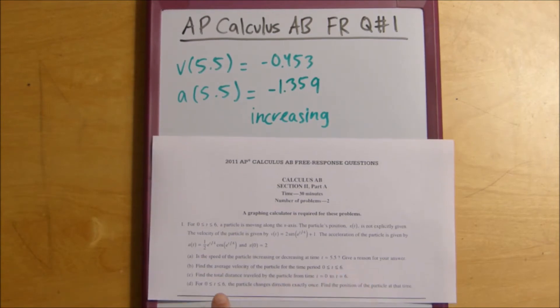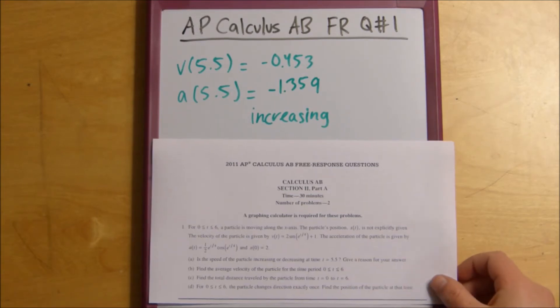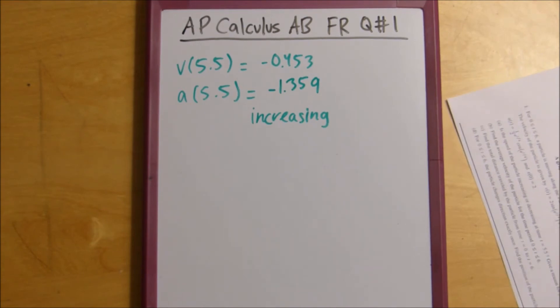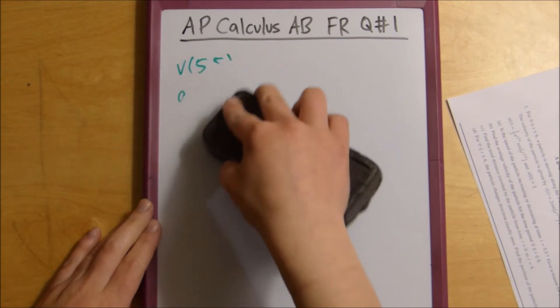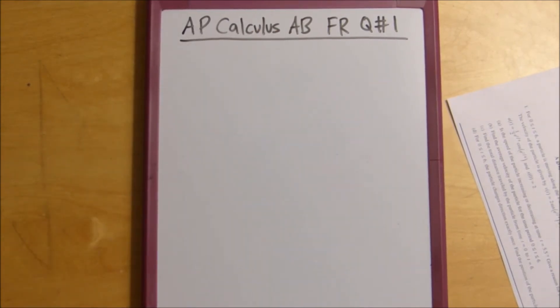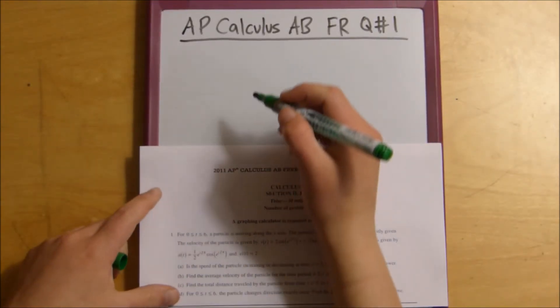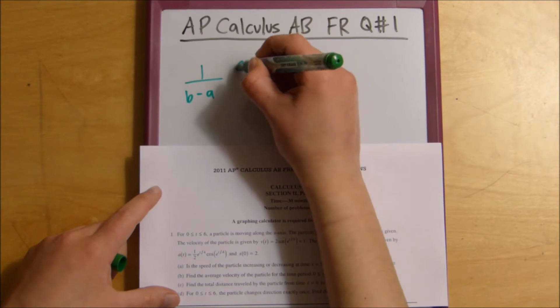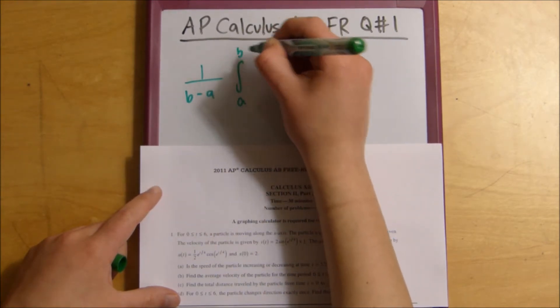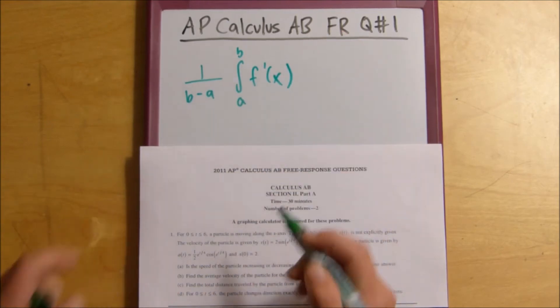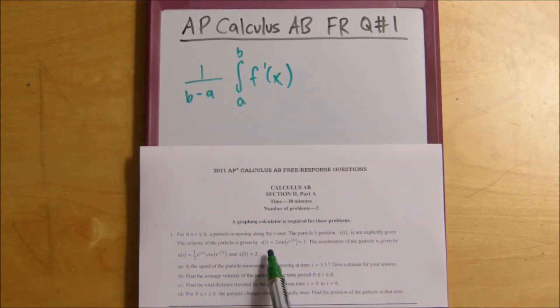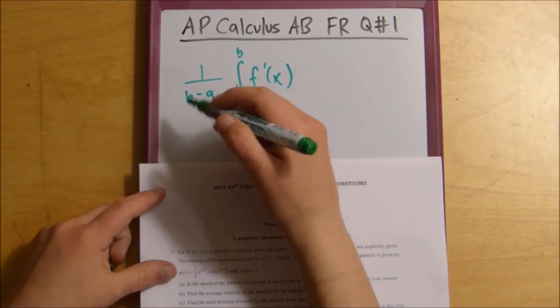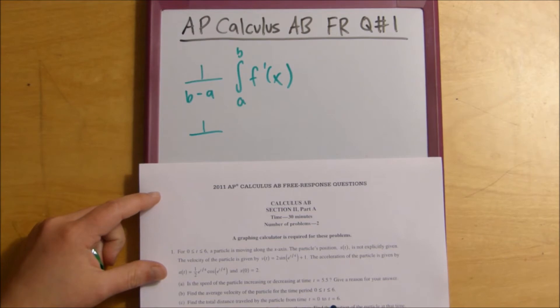Then we move on to finding the average velocity of the particle for the time period 0 is less than t is less than 6. For this part of the problem, what you would do is you would find, you would plug it into the average velocity equation, which is 1 over b minus a times the integral from a to b of f prime of x.